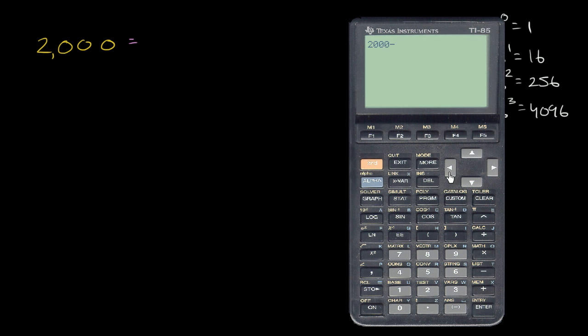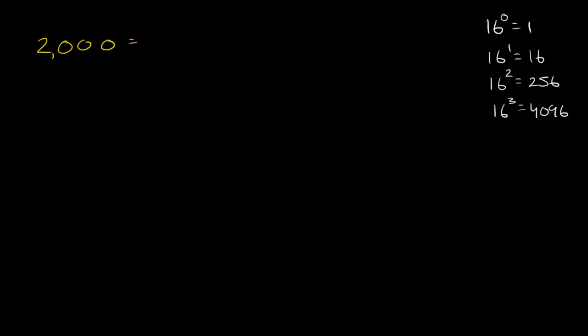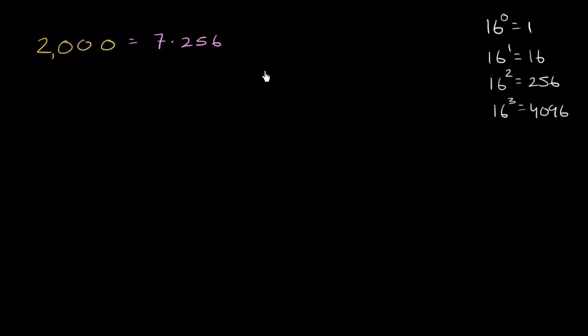So 2,000 divided by 256, so it goes seven times plus a little bit. So what's going to be left over? So 2,000 minus seven times 256 is equal to 208 left over. So let me write that. It's going to be seven times 256, seven times 256 plus 208 left over.